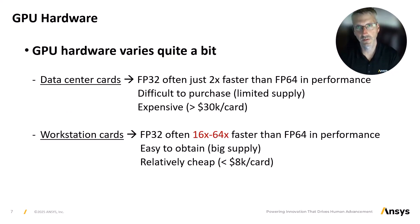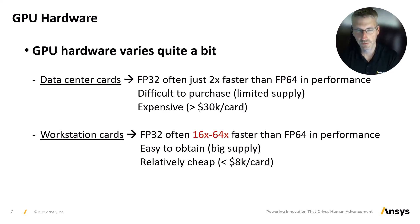The mixed solver uses a variety of floating point precisions and GPU cards to accelerate its computations. The two main GPU card classes are data center and workstation cards. The data center cards are typically very expensive and often difficult to purchase due to their limited supply, primarily because of the high bandwidth memory on each card. These cards usually come in double precision FP64 to single precision FP32 computation ratios of two to one. By contrast, workstation cards are extremely easy to obtain and relatively affordable, and have a much different double precision to single precision computation ratio, often 16 to 64 times faster than double precision computations, assuming the calculations are done using the lower precision.